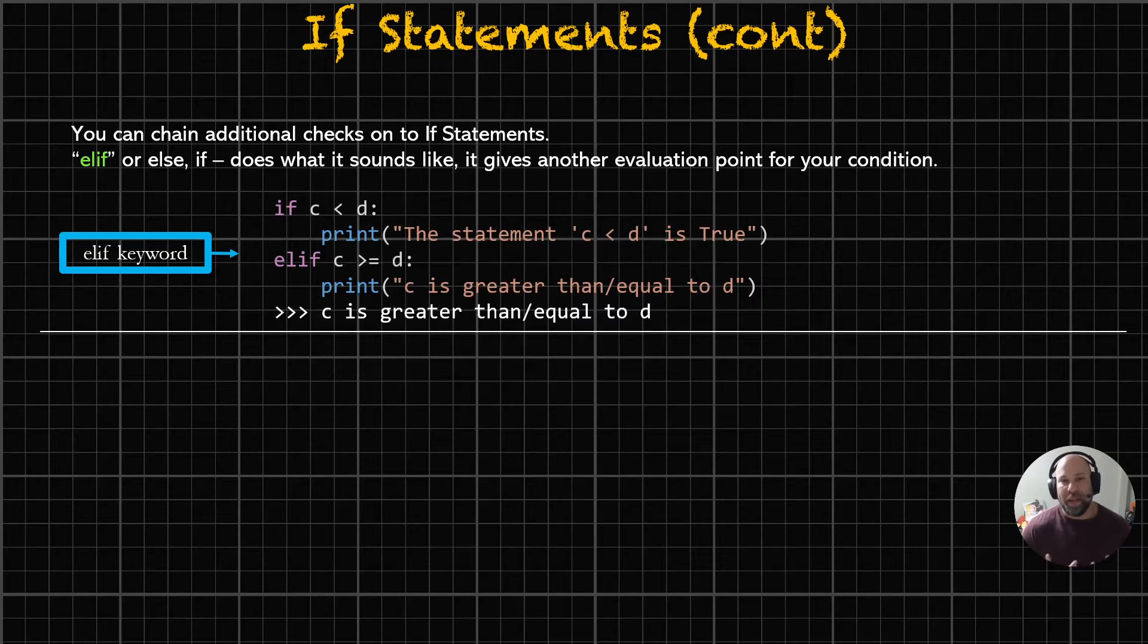So we've got a couple of other tools that we're going to throw in our toolbox, and these are all based off this if concept, this conditional evaluation. And we have another keyword that we can use, and it's elif. And this is a way that we can chain additional checks, additional conditional checks, to evaluate a couple of values. And elif is actually short for else if. Again, Python does the insane justice of making things syntactically apparent of what it's trying to do, what it's trying to say. And essentially, it does exactly what it sounds like. It gets another evaluation point for your condition.